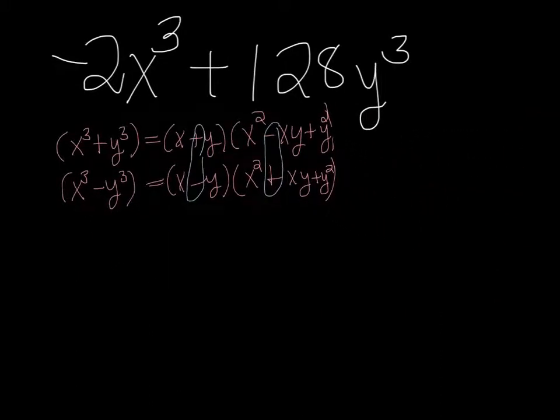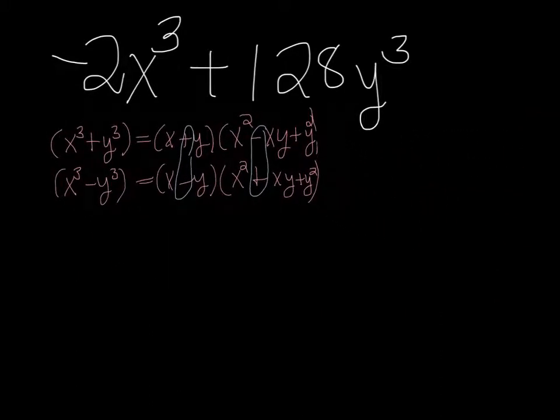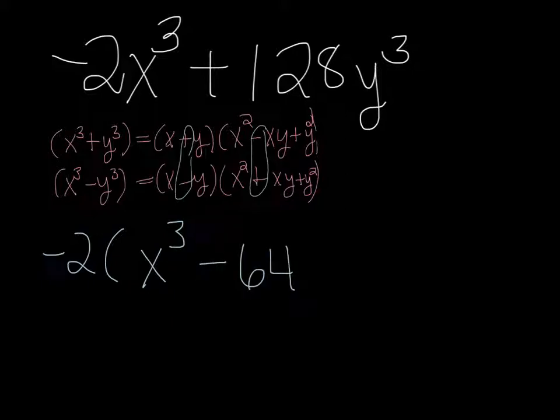So we have to figure out what we're going to put in our formulas. And in any factoring problem, you want to start by factoring the GCF. The GCF of this problem is, we're going to take out a negative two. So it would be negative two, and then what's left is x cubed minus 64y cubed.